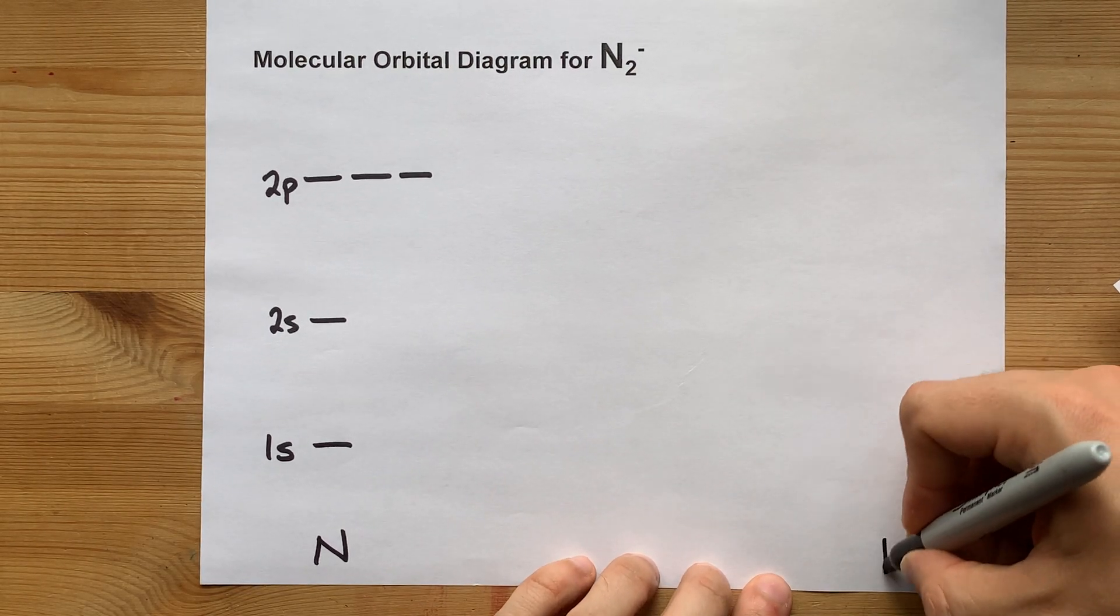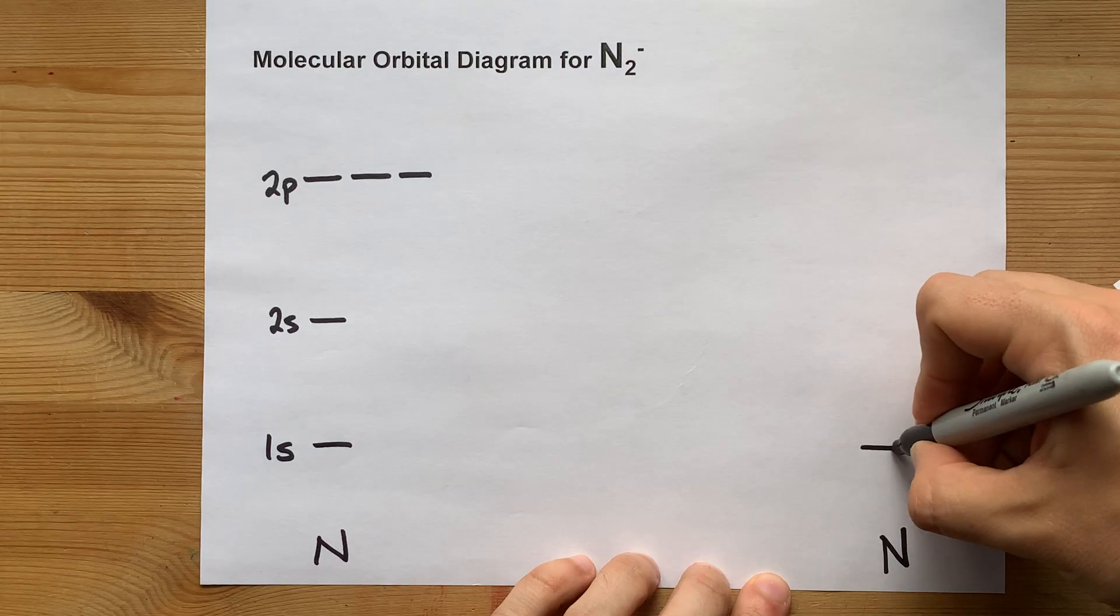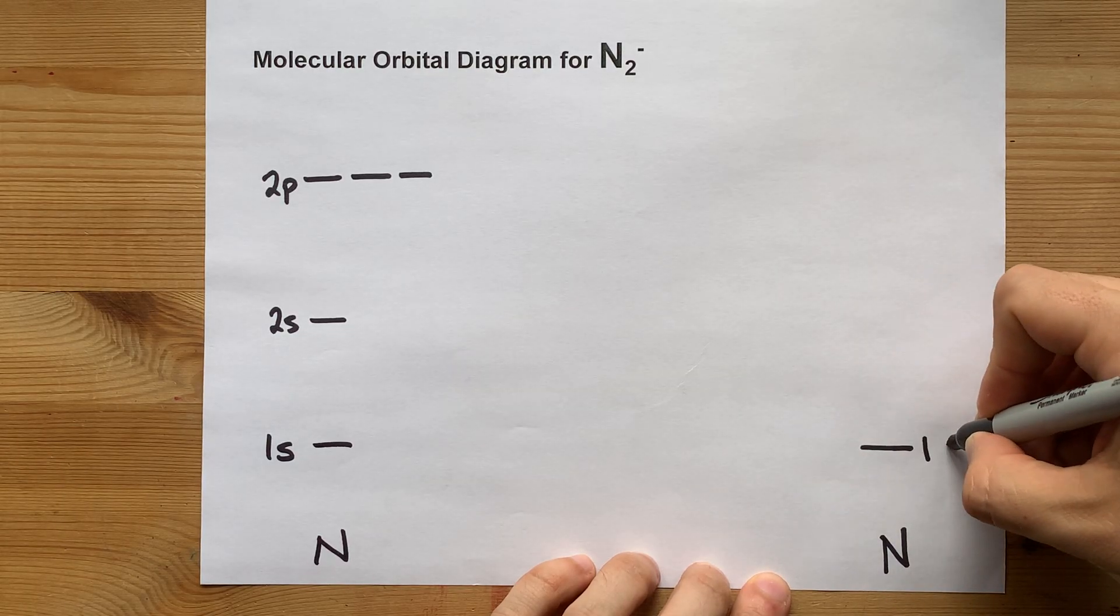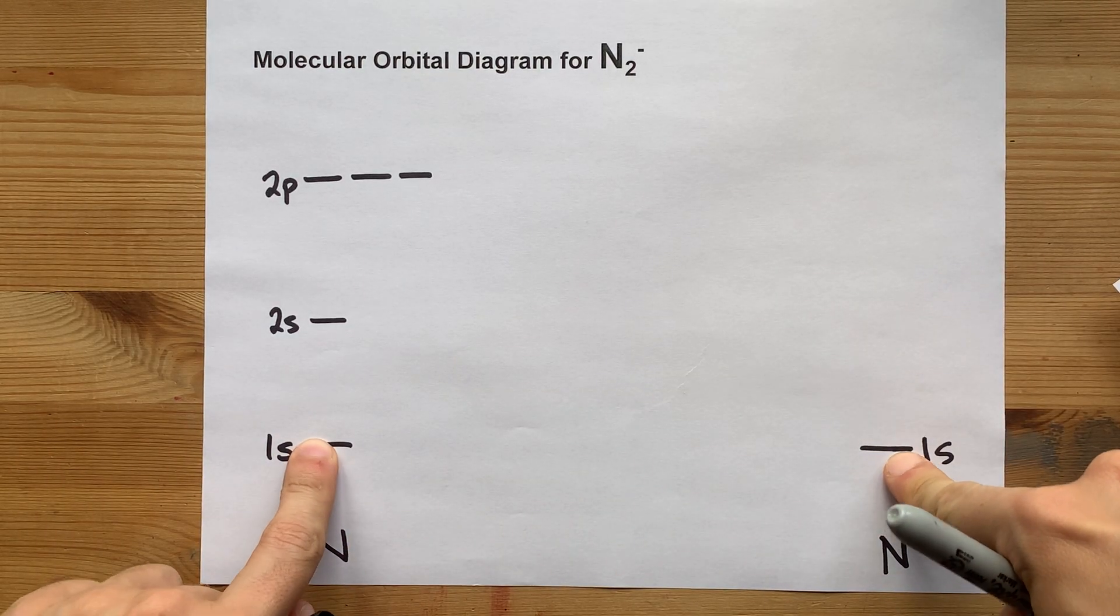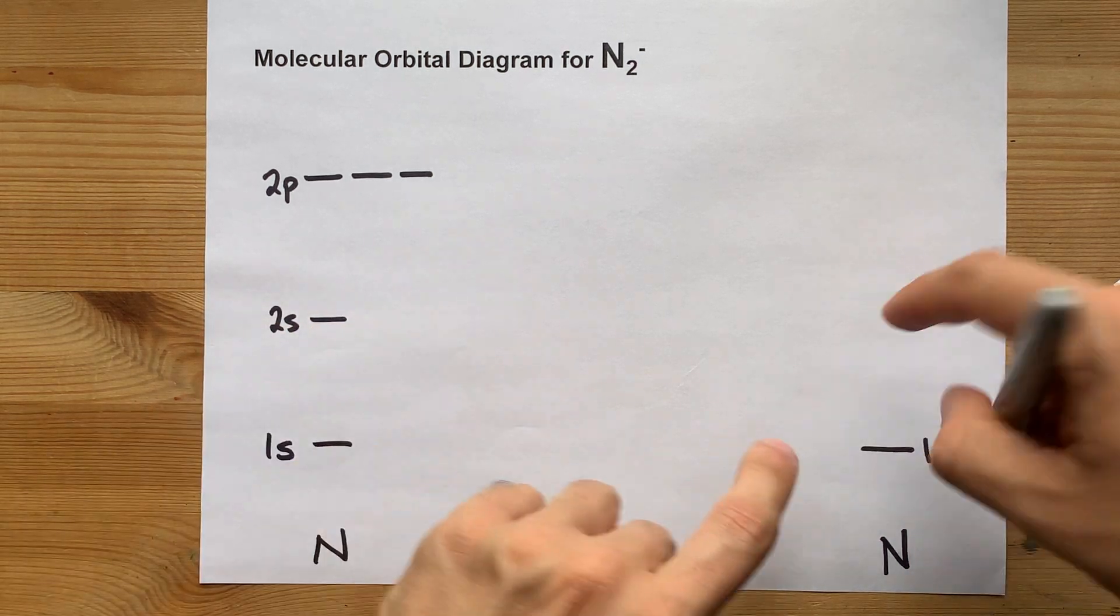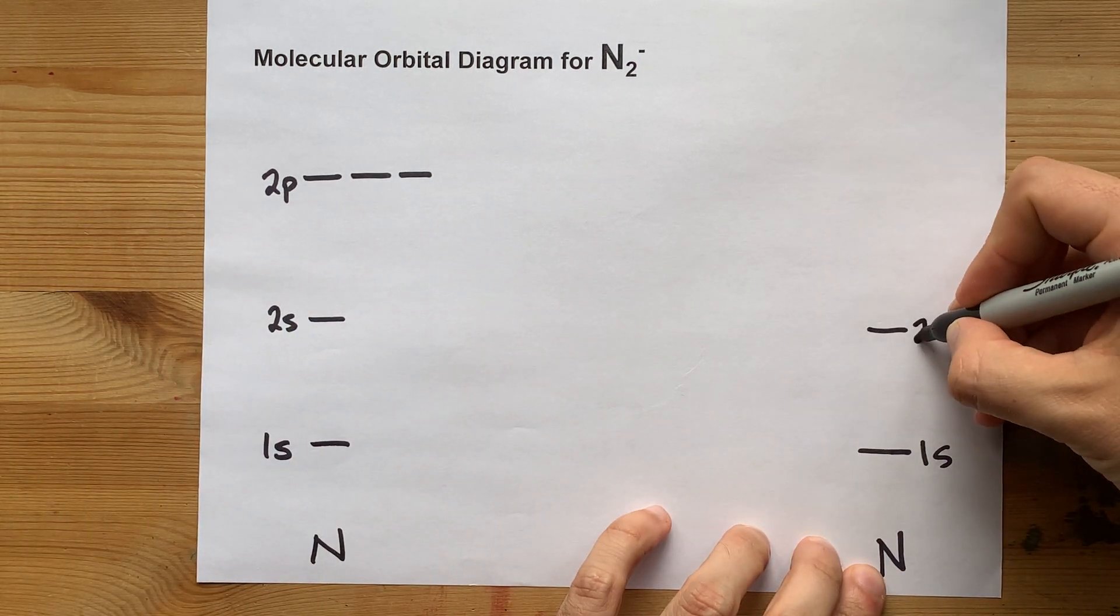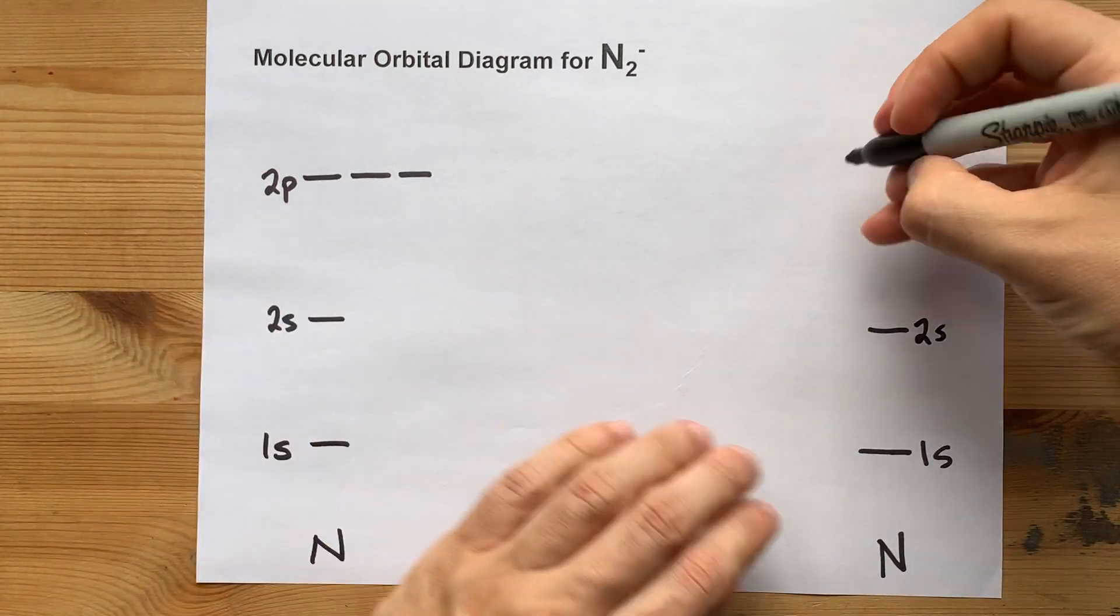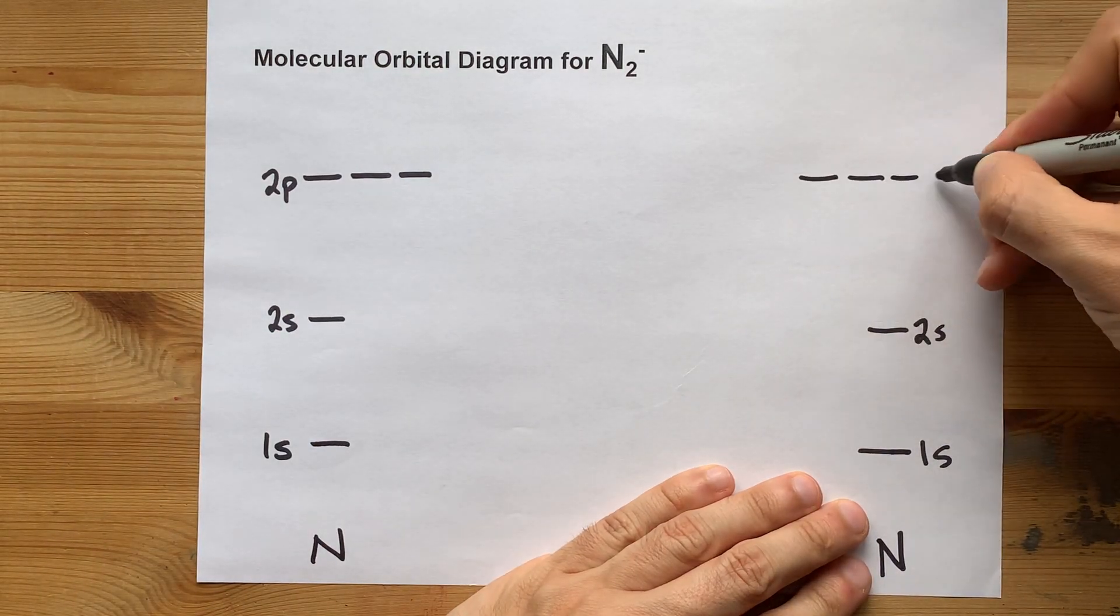This molecule is made out of two N atoms, so you need to copy out a second one over here and do your best to keep these at the same energy, and by that I mean height on the page. These should be the same energy, that's 2s, and these should all be at the same energy, 2p.